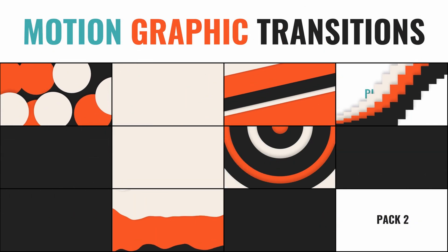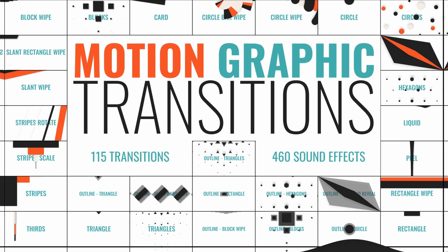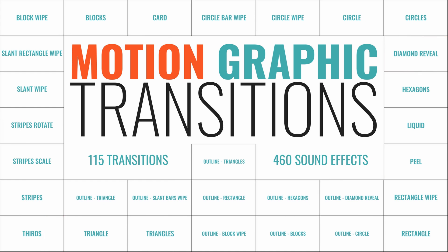So with that list, we started researching practical transitions used by some of the biggest creators out there, and then we started creating. What we came up with was four packs: pack one is all shape transitions, pack two is wipes, pack three are outlines, and then pack four — the ultimate motion graphic transition pack.